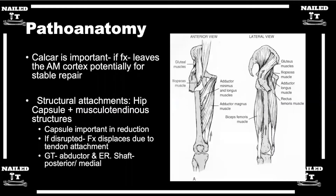Can you go through some of the pathoanatomy of these fractures? We always hear that a lot of these hip fractures have predictable fracture displacement based on the soft tissue attachments. Can you talk about some of the pathoanatomy behind these fractures — what's important and things we should definitely know about?